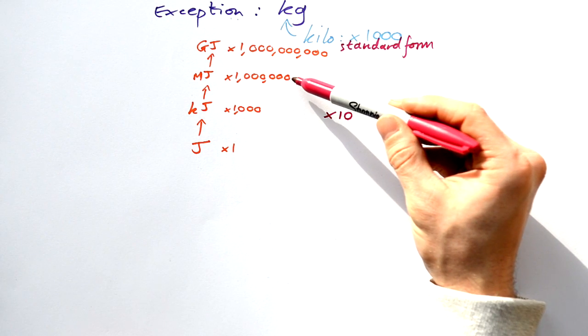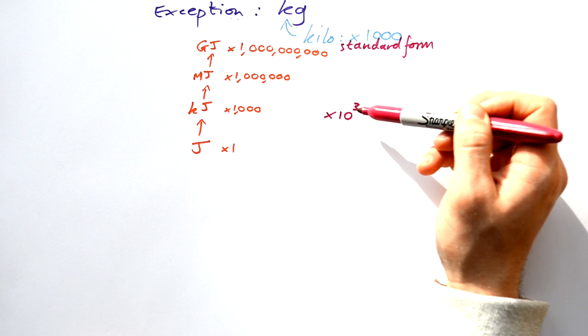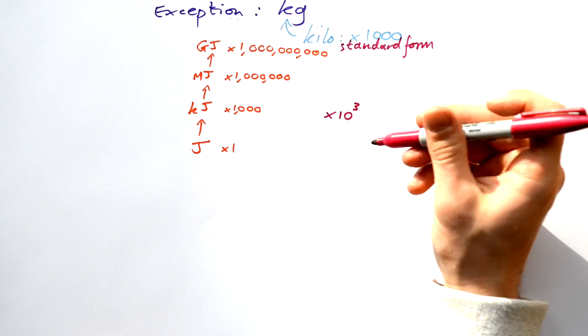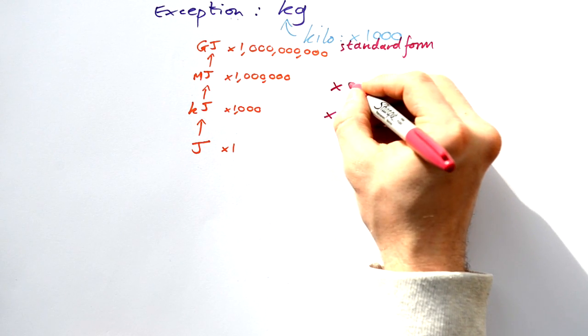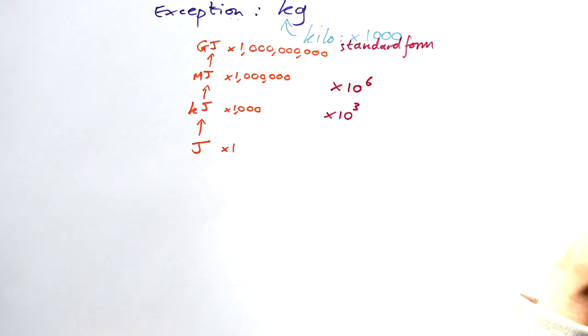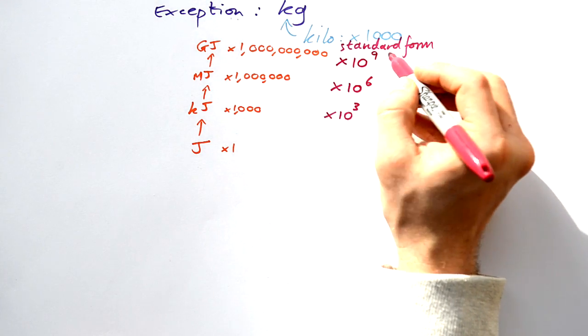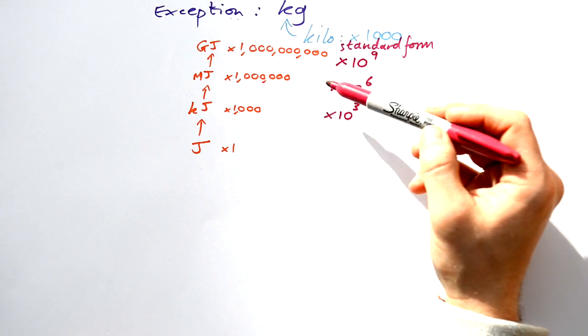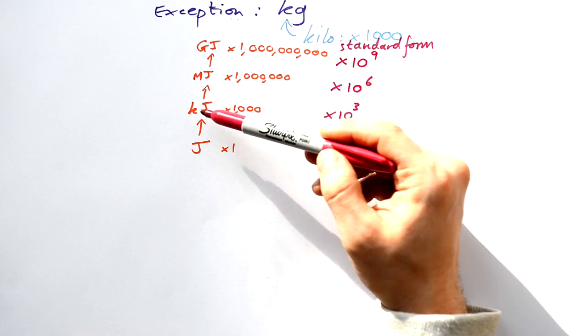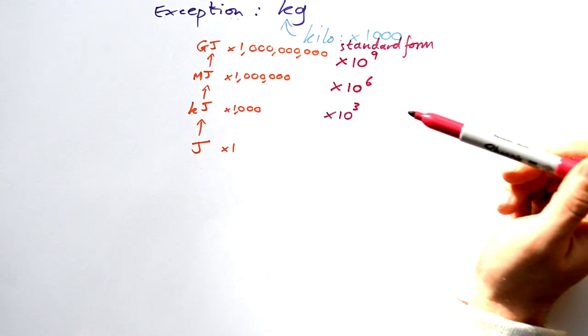Here we have a thousand times another thousand, so we're timesing by 10 three times and then another three times as well. So this is actually times 10 to the 6, and this one here - you guessed it - times 10 to the 9. So it's really useful. We're going up in thousands each time we have a prefix like kilo, mega, and giga.